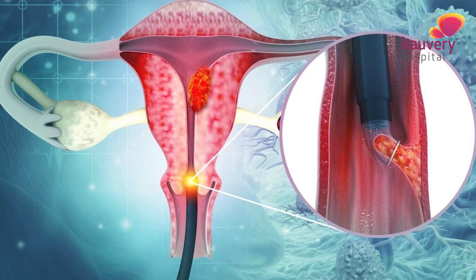Endometrial biopsy and a blood test to measure serum progesterone can also be done to find out whether the woman is ovulating or not.